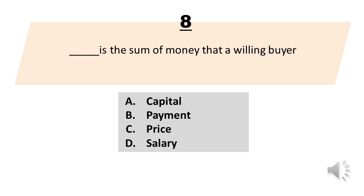It is the sum of money that a willing buyer pays. A. Capital. B. Payment. C. Price. D. Salary. The answer is Letter C, Price.